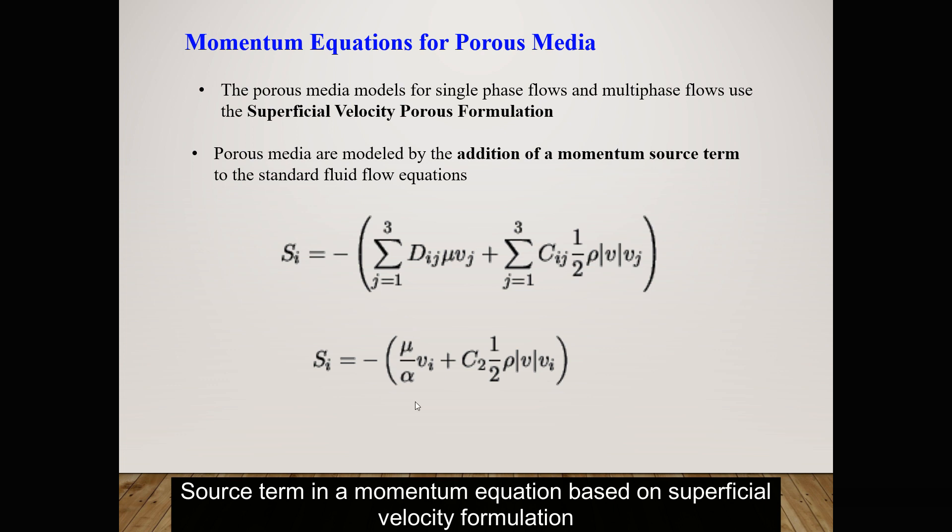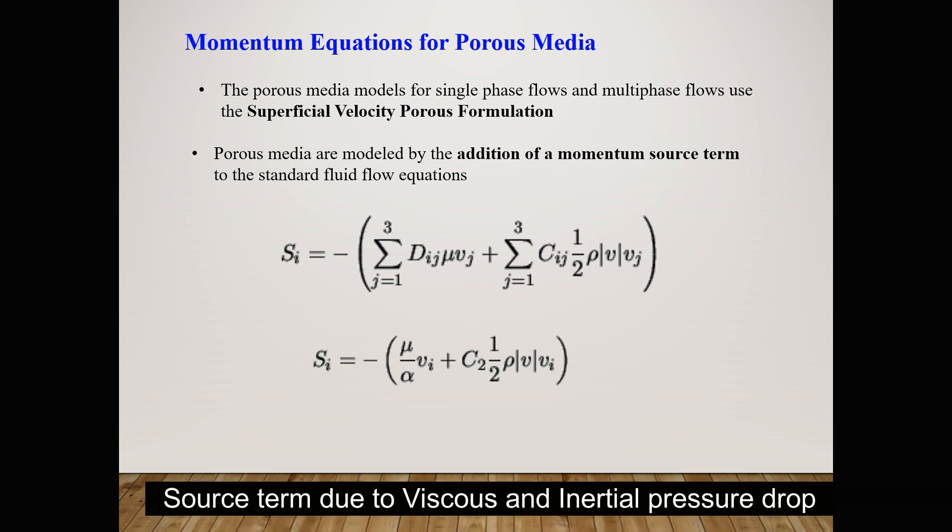The first term is pressure drop due to viscous effects in porous setting, and the second part is pressure drop due to dynamic pressure, half rho v squared. C2 is a constant that depends upon direction and can be calculated by comparing pressure drop with respect to experimental data.